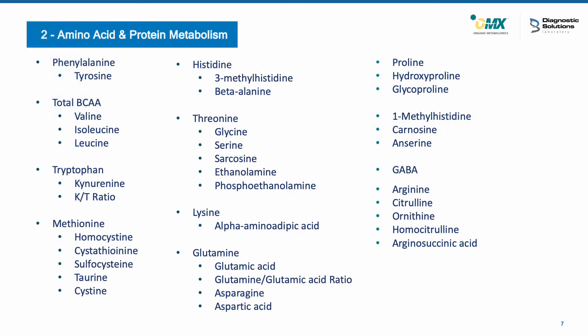Section 2 covers amino acid and protein metabolism. It looks at the metabolism of essential amino acids, their catabolic products, as well as collagen catabolism, meat intake, GABA, and the urea cycle.